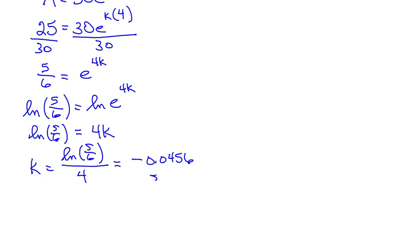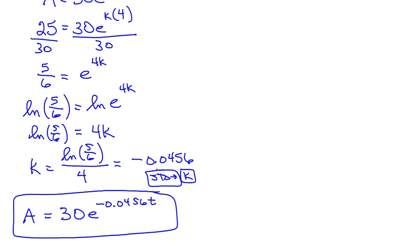Again, you need to store this in your calculator. Store that as k. And we can write the model as A is equal to 30 times e to the negative 0.0456t as the exponential model that tells us how much of the substance is left after t hours.